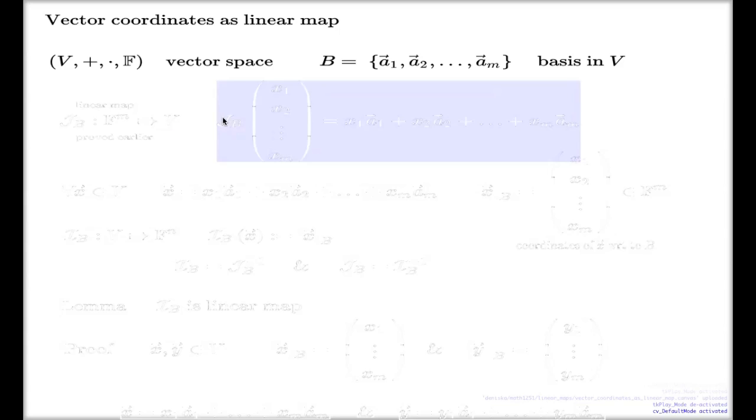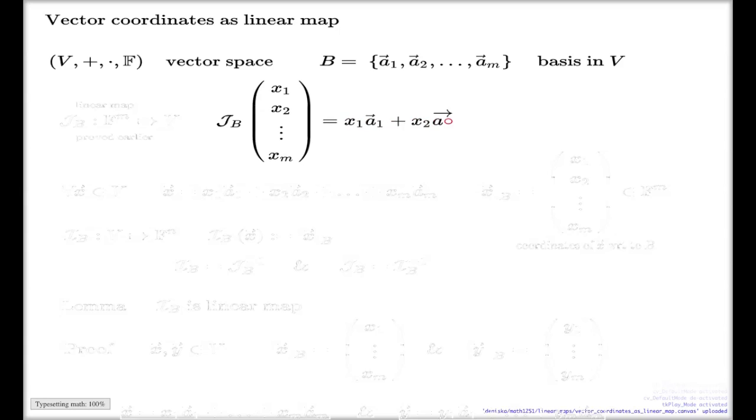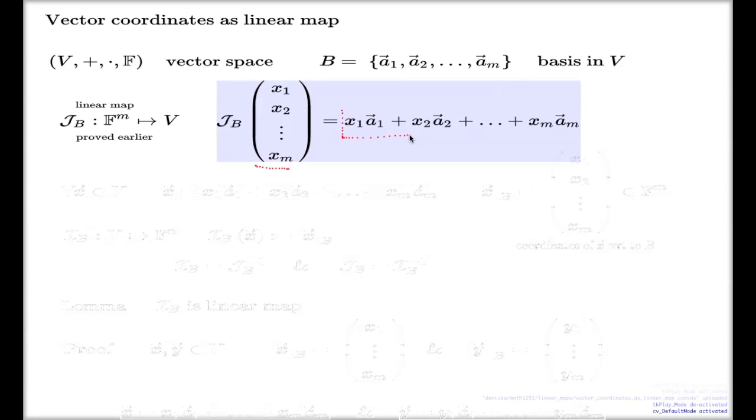We discussed that if I introduce a mapping like this, I didn't use this symbol on Thursday. I used the symbol T, like a general symbol T for a linear map. But this time, I'm using this particular J sub B symbol. So it's a map which takes the m-tuple of scalars and returns the linear combination of the basis vectors. So it's a map which takes F^m to V.